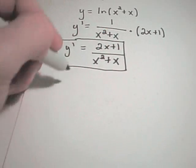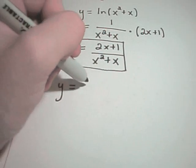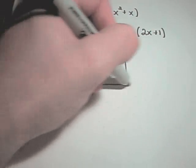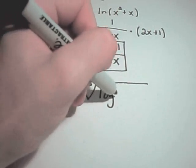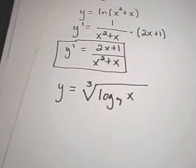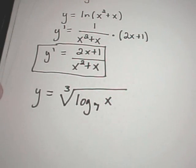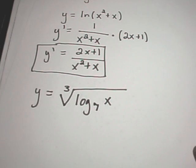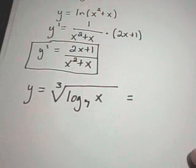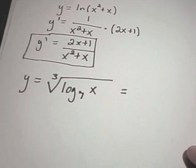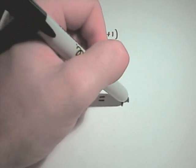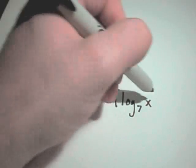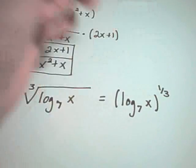Suppose I have, as another example, the cube root of log base 7 of x. Any time I have radicals present and I'm going to take a derivative, I rewrite these as fractional exponents. So I'll have log base 7 of x raised to the 1/3 power.